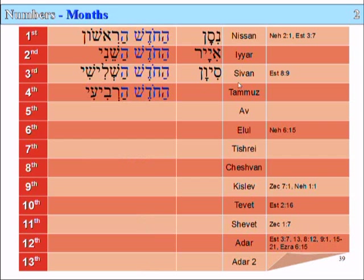The fourth month is called HaKhodesh HaRevi'i — the fourth month. And the Babylonian name for this is Tammuz. This is the month where they would weep for Tammuz, which is a picture, really, of the Antichrist or the Babylonian sun god deity.